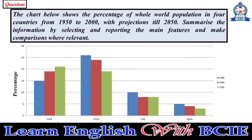The chart below shows the percentage of the whole world population in four countries from 1950 to 2000, with projections till 2050. Summarize the information by selecting and reporting the main features and make comparisons where relevant.